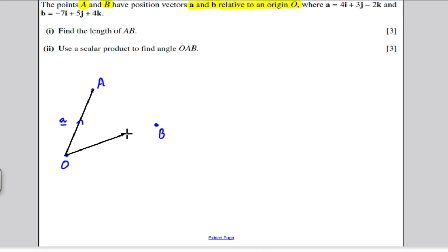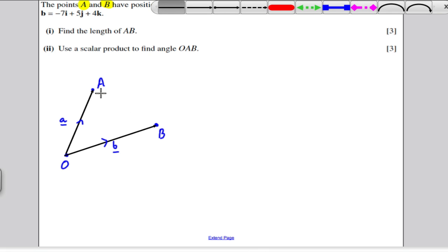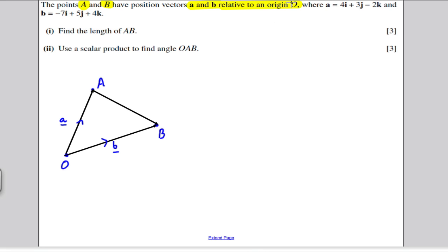And I'm going to say the vector from O to B, I'm told what that is, it's little b, and I want to find the length of A to B, so I want to find the length of this here. So the first thing I'm going to do is I'm going to define a vector, I'm going to call that vector C, I'm going to let the vector C be the vector from A, starting at A and ending at B.